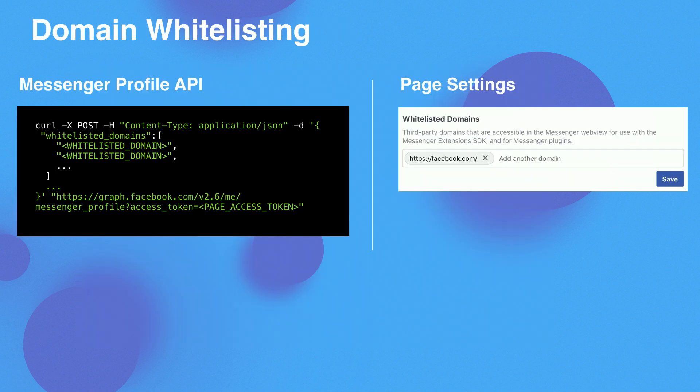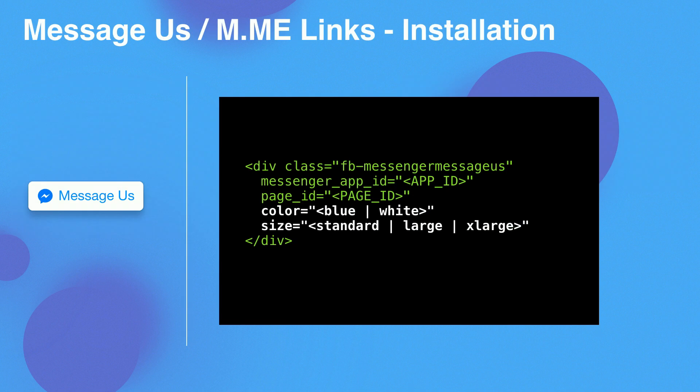We want to make sure only your website can use those plugins with your Facebook page, so there's a process to whitelist all the domains using those plugins. You can either do this using our Messenger Profile API, or you can use our page settings UI to whitelist the domains. To install the Message Us plugin, simply put this small piece of code on your website with your Facebook page ID and app ID.